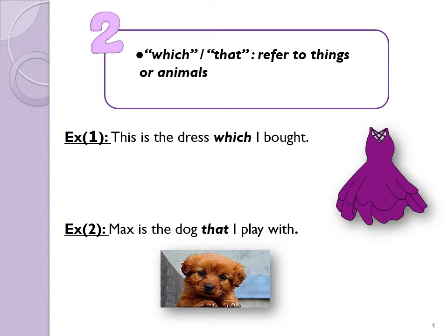The same form is used in example two: Max is the dog that I play with. Instead of repeating the proper noun Max in two separate sentences like 'this is Max, Max is the dog I play with', we form it in one sentence: Max is the dog that I play with.